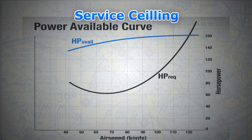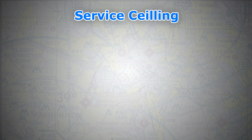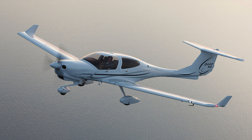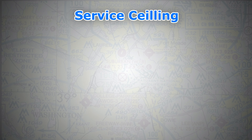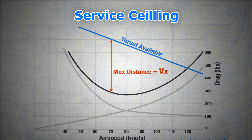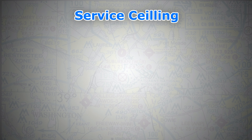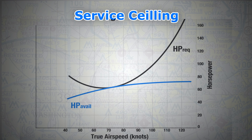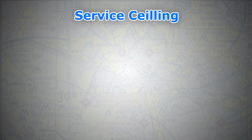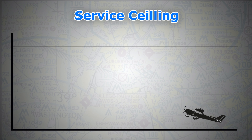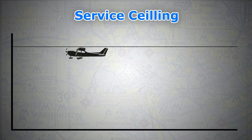As we go higher in altitude, the air becomes thinner and thinner. Propeller-driven airplanes are only efficient at low density altitudes. When we climb, the power that your engine can produce decreases due to the thinner air, while the power required to sustain level flight increases. As the two curves close in on each other, the excess thrust decreases and so does the rate of climb, until the altitude at which the rate of climb drops to 100 feet per minute for propeller-driven aircraft.